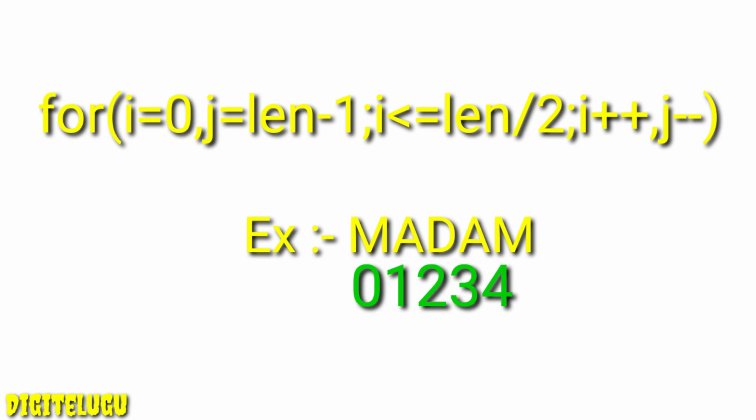Next condition: i less than or equal to length divided by 2. Total length is 5, so length/2 is 2 — we only iterate over the lower half. So i goes 0, 1, 2 — the lower half. The upper half is 3, 4. So i less than or equal to length/2 means i works through half the string. Next: i plus plus and j minus minus — i increments, j decrements, moving toward opposite sides.